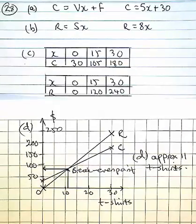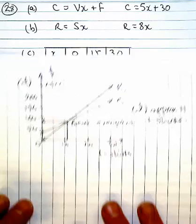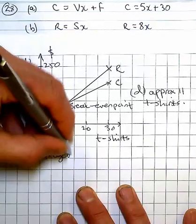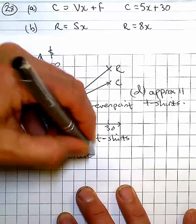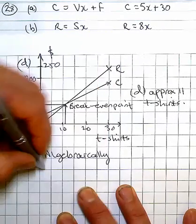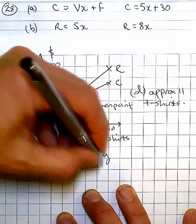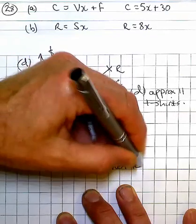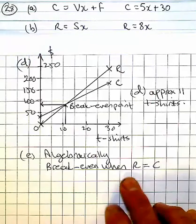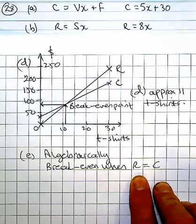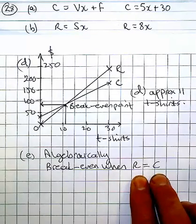Now this would be found much more accurately using a little bit of algebra. So I'll work through part E algebraically. I normally write revenue equals cost because the revenue variable will always be bigger than the cost variable.